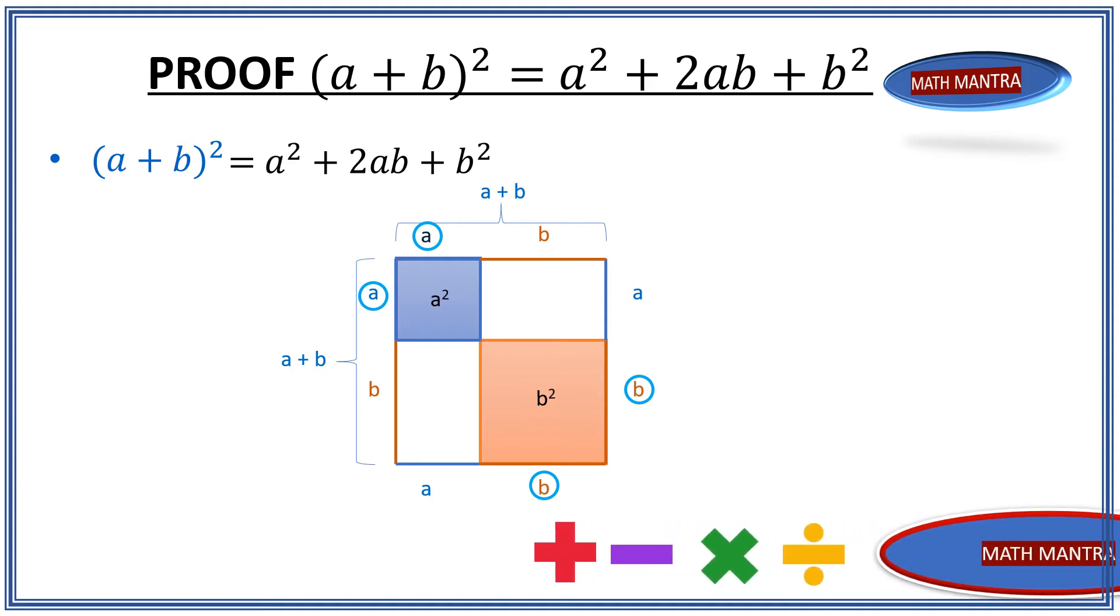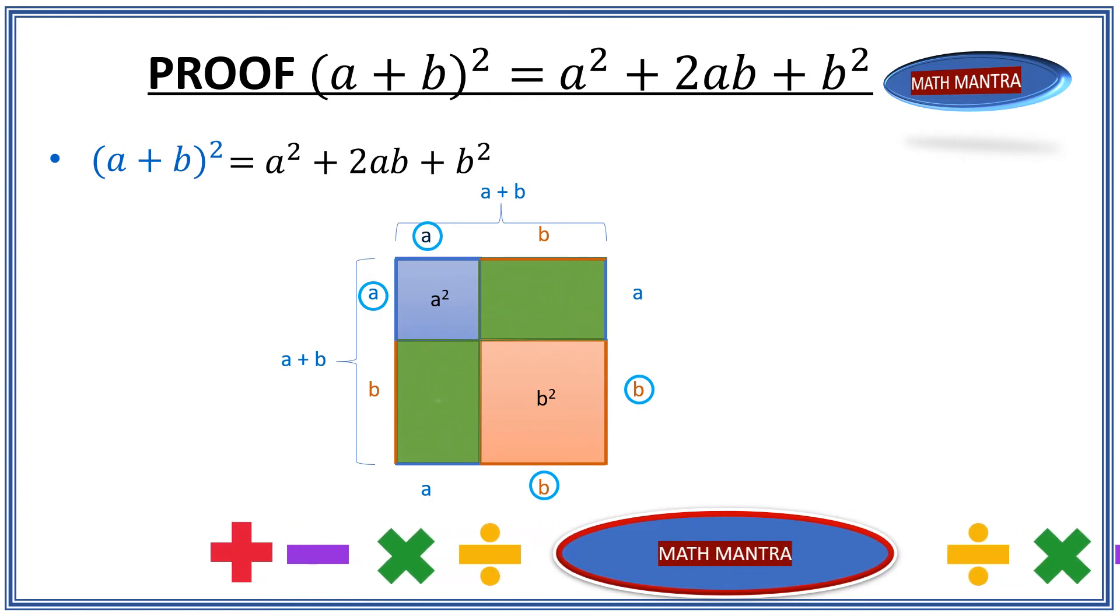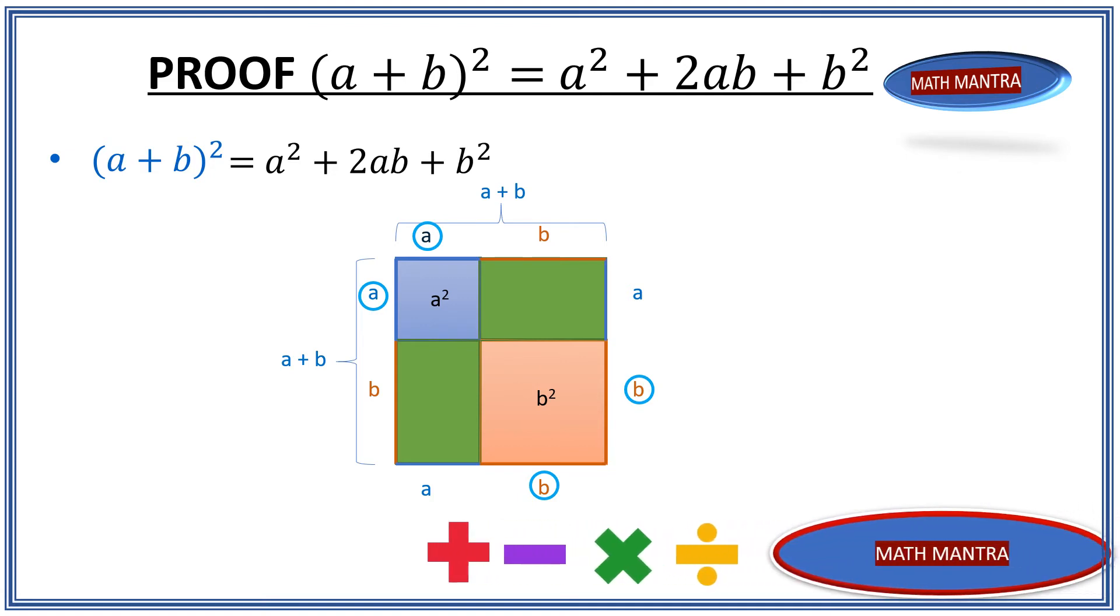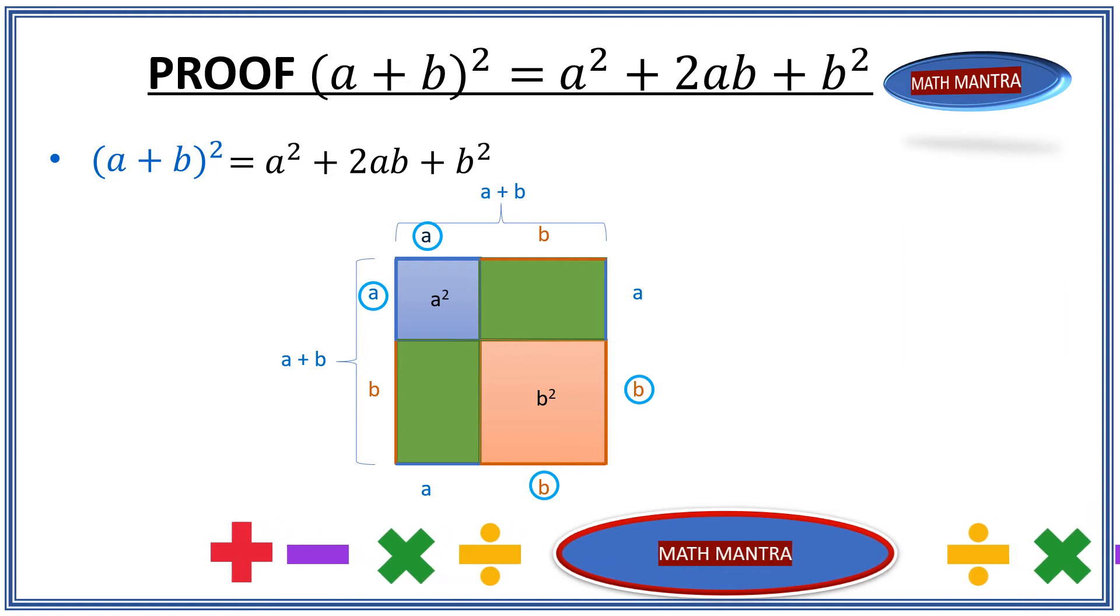However, we still have two small rectangles shown here with the green that we still need to add to put it together as a whole (a + b)². So what is the area of those rectangles?